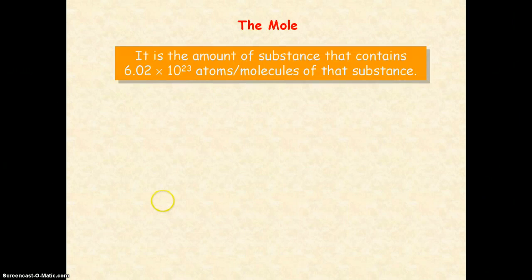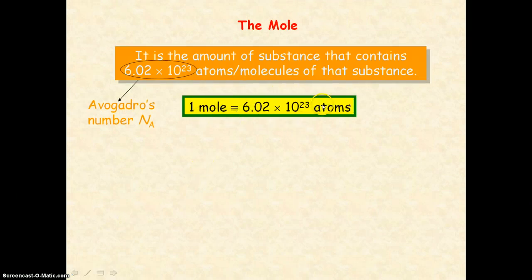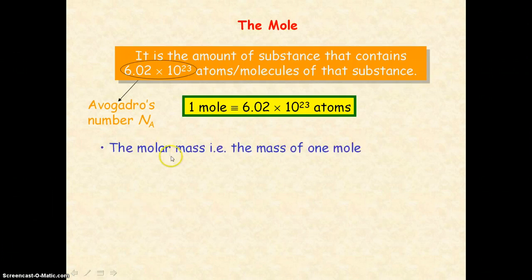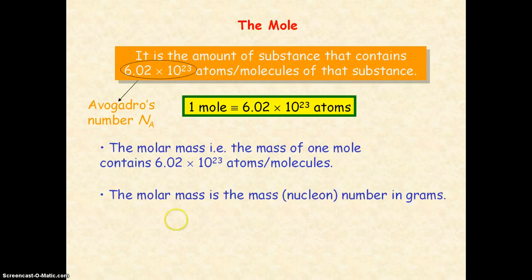A mole represents the amount of substance that contains Avogadro's number of atoms or molecules of that substance. Avogadro's number is 6.02 × 10²³ atoms or molecules per mole. So one mole has Avogadro's number of atoms. Another term you need to know is molar mass, which means the mass of one mole of substance. Because it represents the mass of one mole, a molar mass will contain Avogadro's number of atoms and molecules.